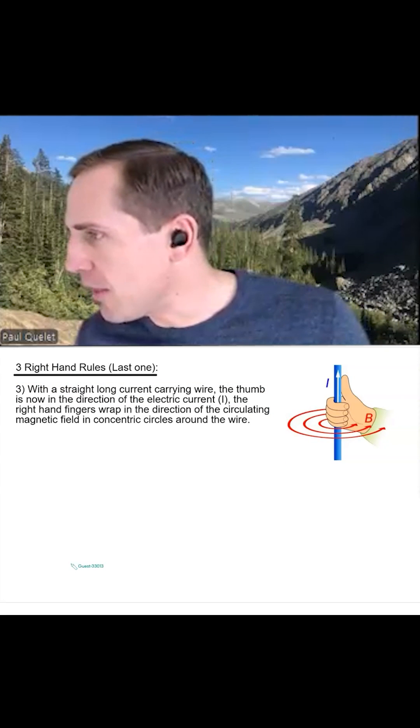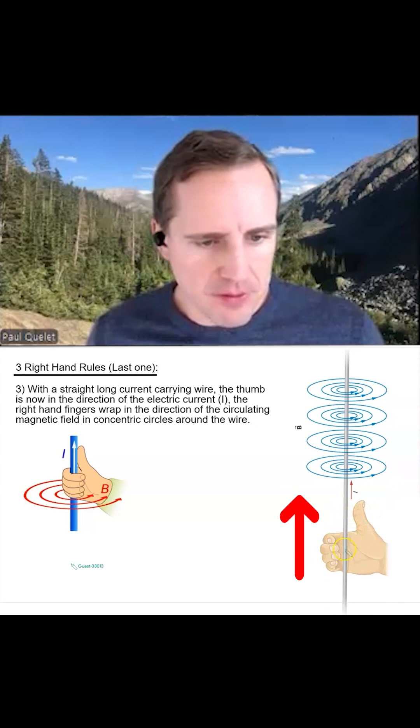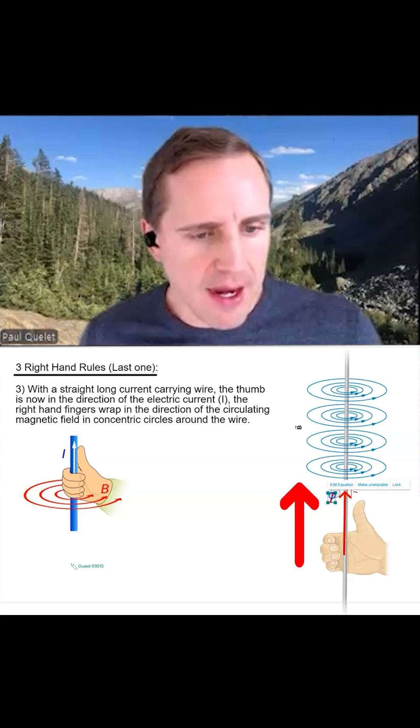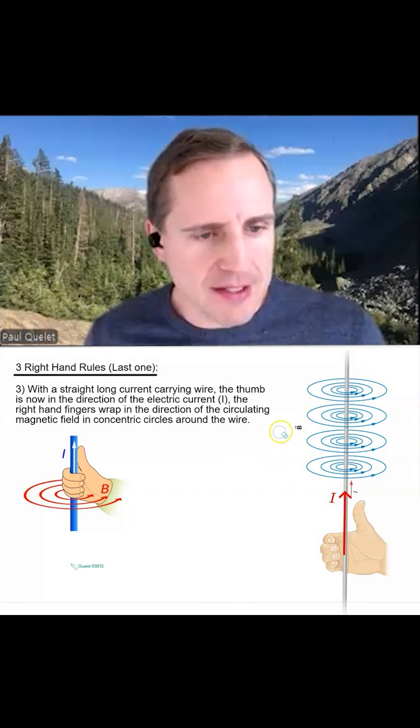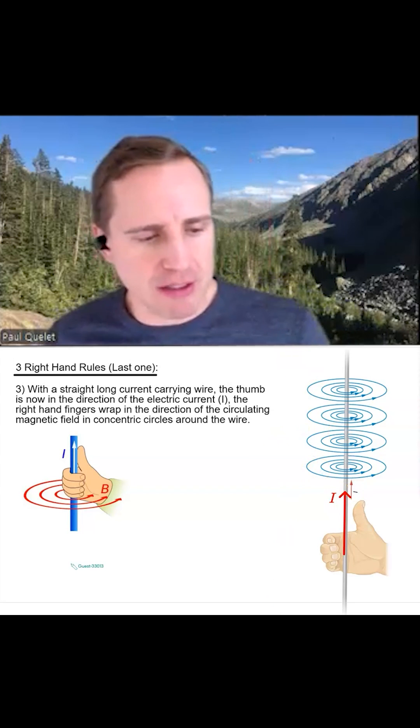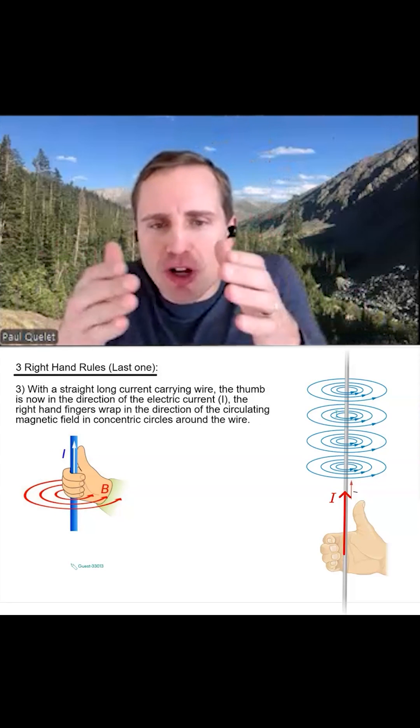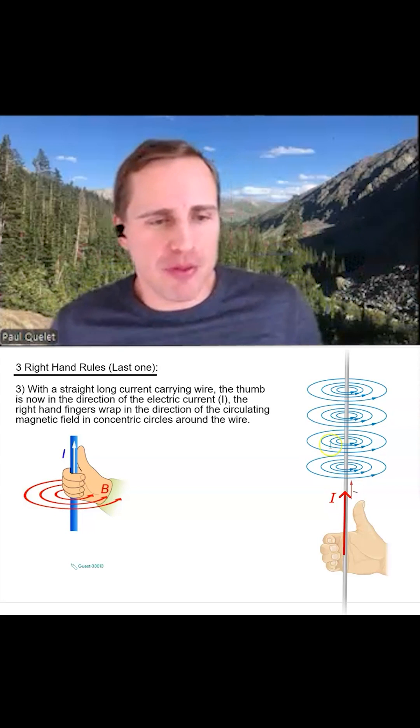This might even be a better way to think about it. The current is traveling upwards, so here's the direction of the electric current, that's a capital I. The magnetic field is forming concentric circles around the straight long current carrying wire. Notice that the circles are closer together near the wire itself, but they're further apart the further you go out there.